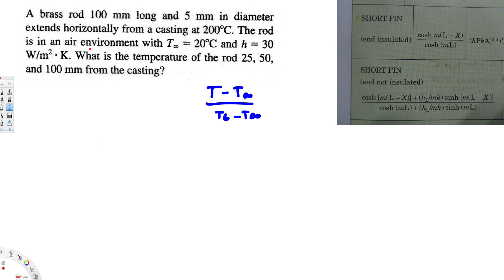Let's list all the given information. First, we have the length of this rod, that's 100 millimeters, equal to 0.1 meters. Since this is a brass rod, the thermal conductivity is 133 watts per meter degree Celsius.